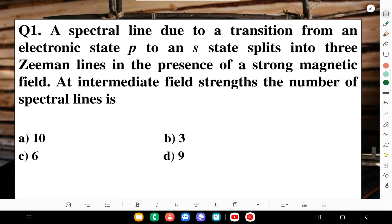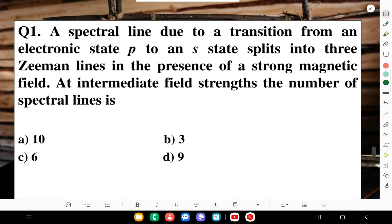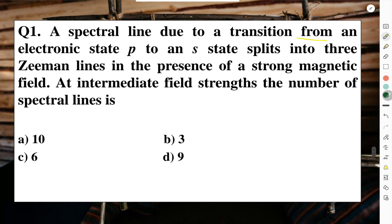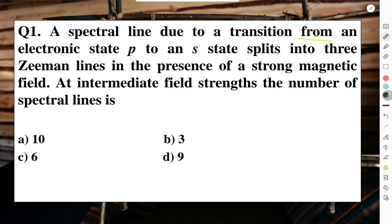The first question is from the anomalous Zeeman effect. A spectral line due to a transition from an electronic P state to an S state splits into three Zeeman lines in the presence of a strong magnetic field. At intermediate field strength, we need to find the number of spectral lines.